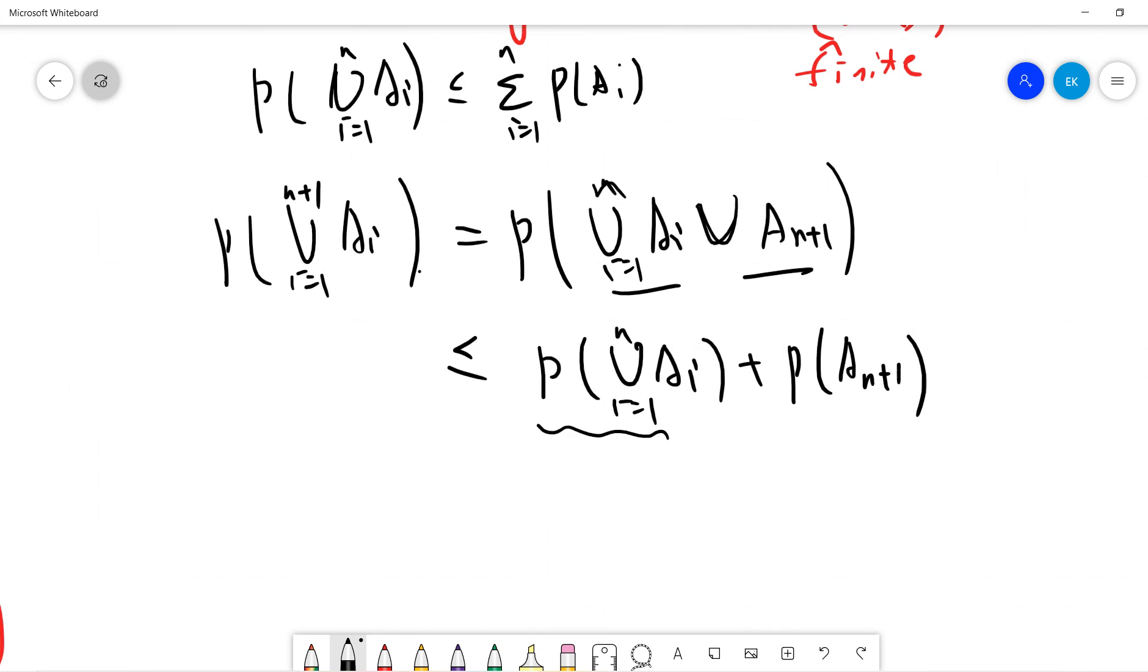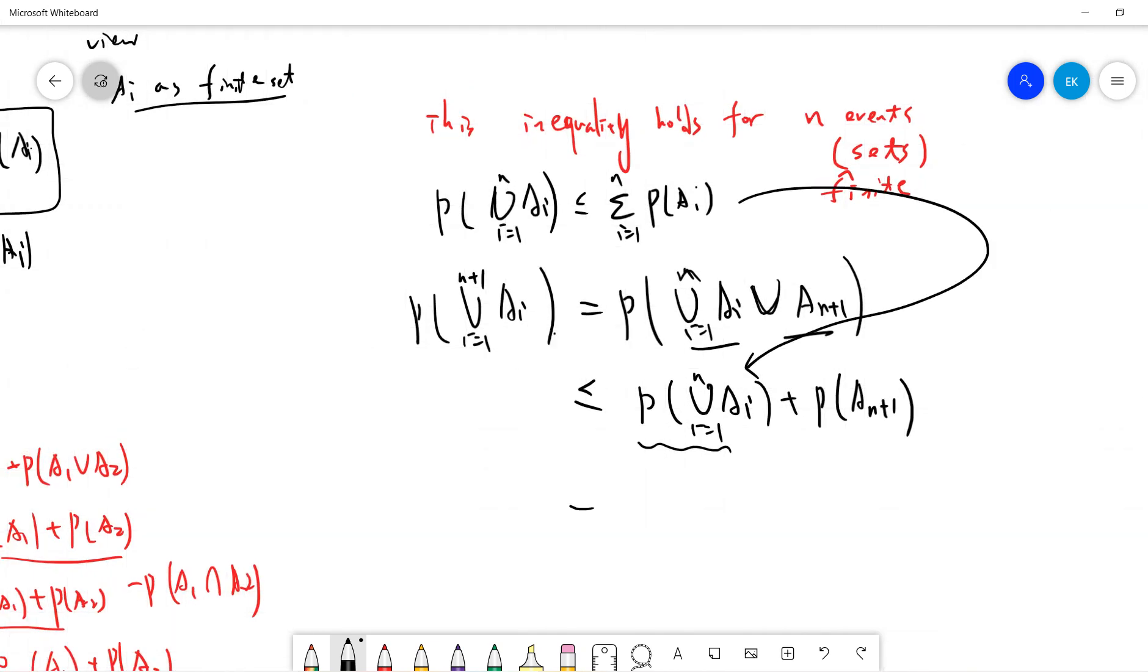And from the previous results, this becomes sum of P(Ai) from i=1 to n, plus P(A(n+1)), which is i from 1 to n+1. So proof done. It's an easy proof. If you like measure theory, you can prove it using subadditivity. But I think it's enough for just proving this way.